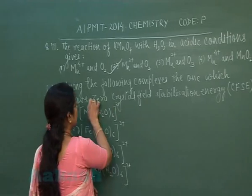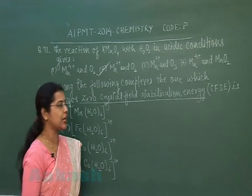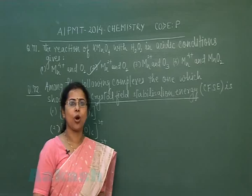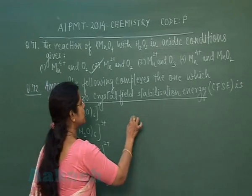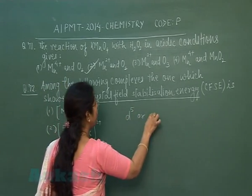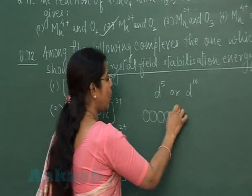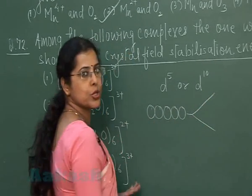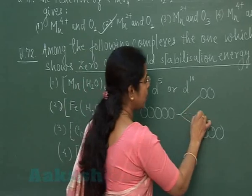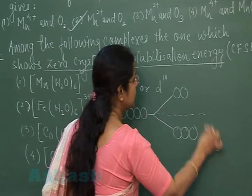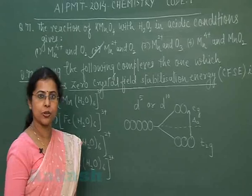Now see, in this question the information is about CFSE or crystal field stabilization energy. Any complex will have zero CFSE value if its configuration is d5 or d10, because in the presence of ligand the d orbitals are split into two sets: one is called t2g group, another is eg group. The difference between t2g and eg is called crystal field splitting energy of octahedral complexes.